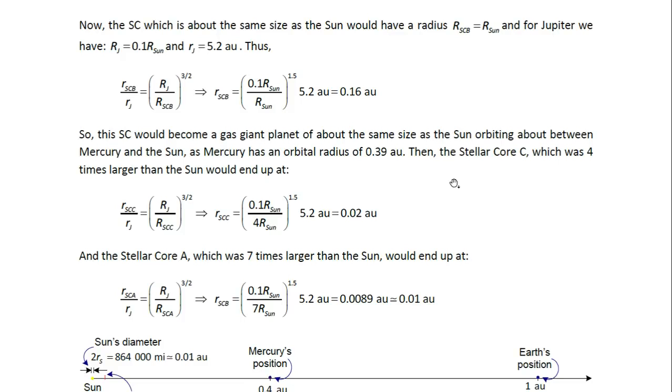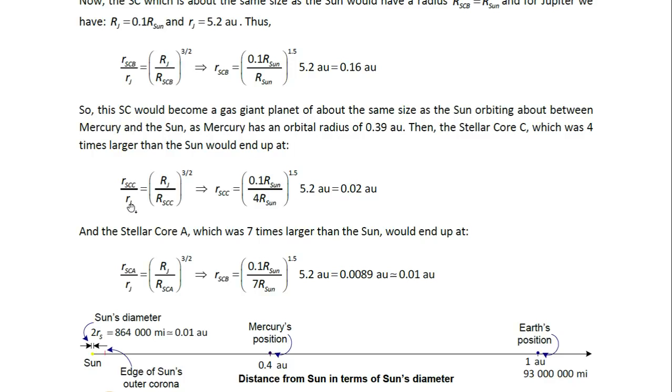Then the stellar core C, which was 4 times larger than the Sun, would end up at, and we're going to use the same equation, but now for stellar core C instead of stellar core B. And stellar core C has a radius which is 4 times the radius of the Sun. So we have 0.1 over 4 to the power of 1.5 times 5.2 AU gives us 0.02 AU.